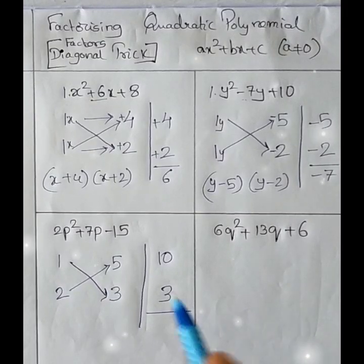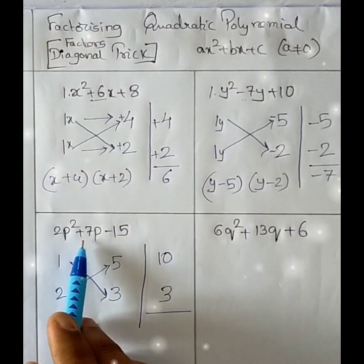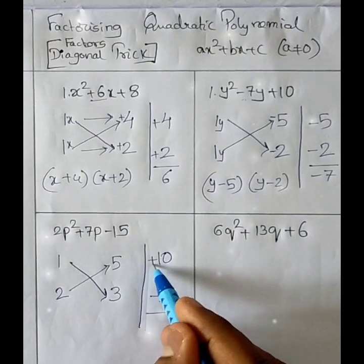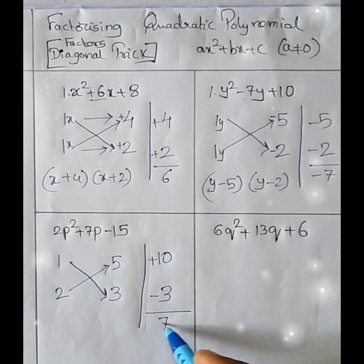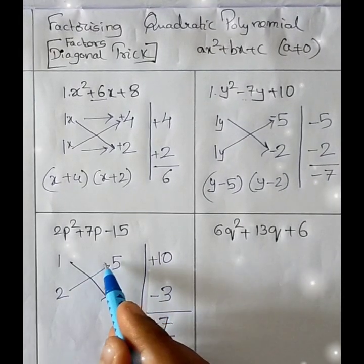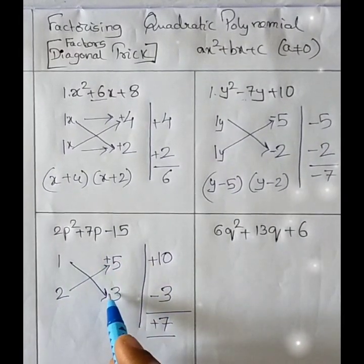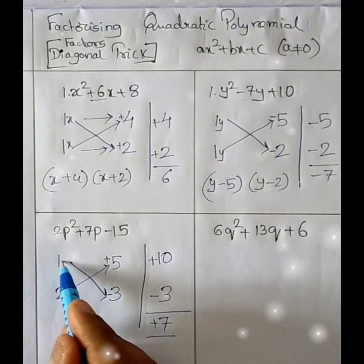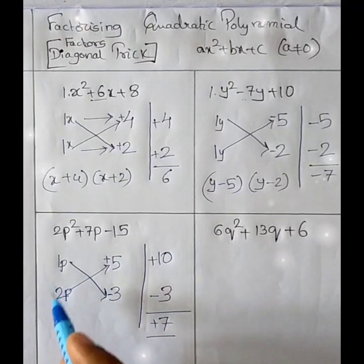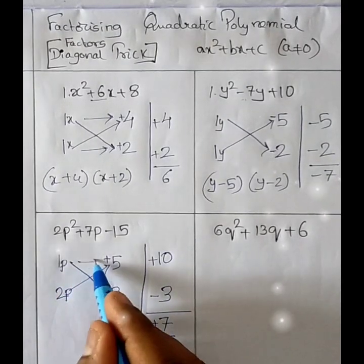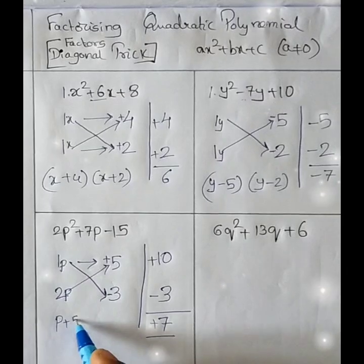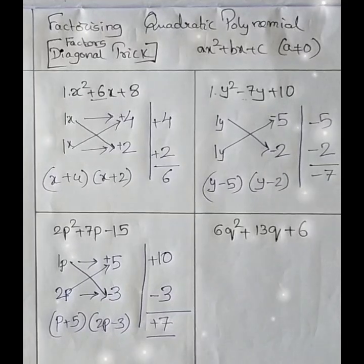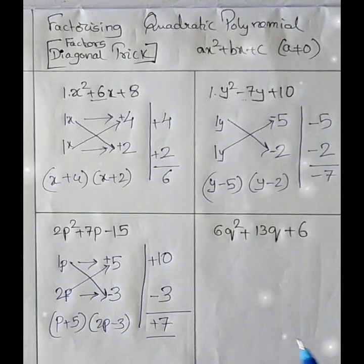Now the middle term is +7. So the signs are: minus 3 and plus 10 — since +10 − 3 = +7. Keeping these signs: +5 and −3, placing p in the variable positions. The factors are (p + 5)(2p − 3).